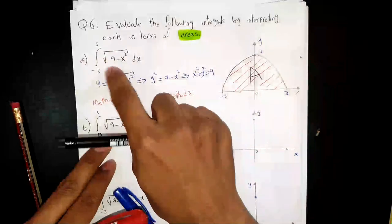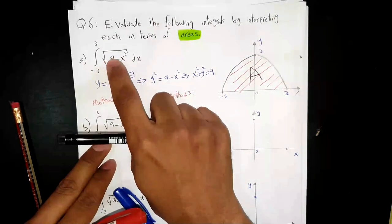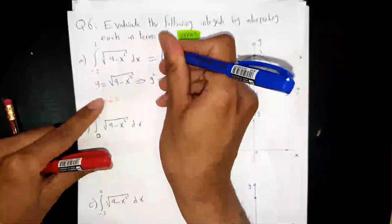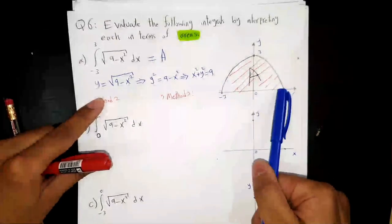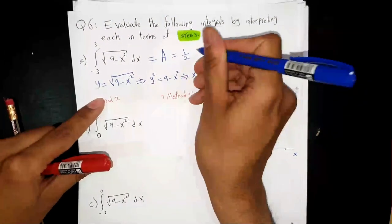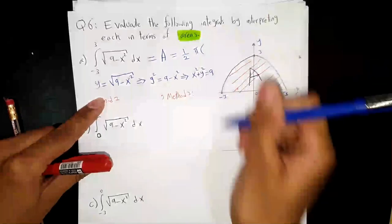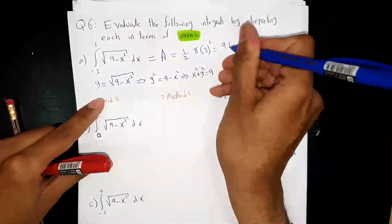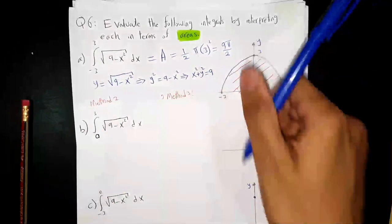Recall: if the function is non-negative, then the integral will represent the area. And what is the area here? It is just a half-circle. So this is half × π × radius², where the radius is 3. The answer is 9π/2.